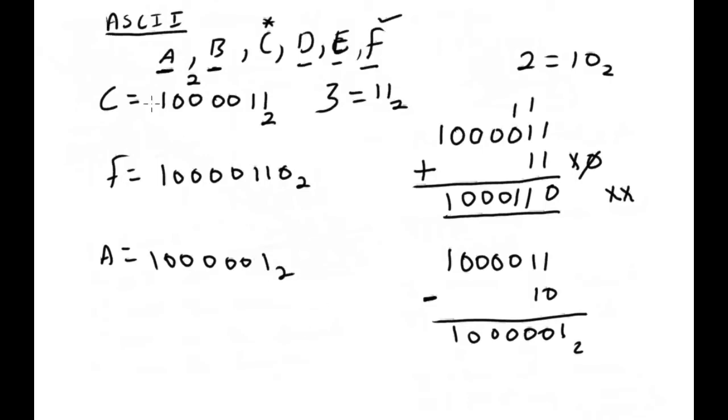And there we have it. So I started with C, they gave me the value for C and they asked me what is F. F comes after C, so I need to add the number of spaces in binary to find the value for F. If I was dealing with A, then I will need to subtract because A comes before C in the alphabet.